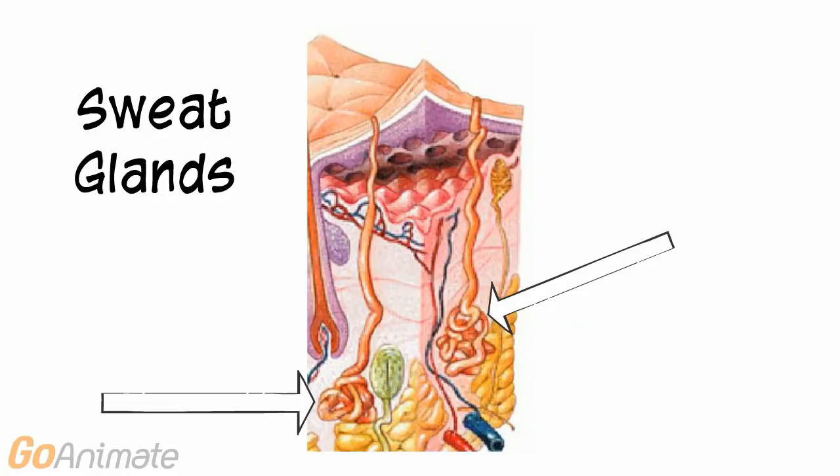Eccrine sweat glands secrete their substances directly onto the surface of the skin. They are coiled, tubular glands that secrete a substance that mostly consists of water with a trace of some electrolytes and a peptide with antibiotic properties. The eccrine sweat glands' primary function is to help regulate body temperature. The sweat can evaporate and carry away heat. The sweat also excretes water and electrolytes.